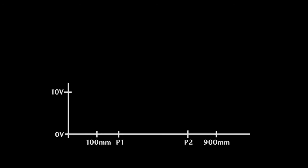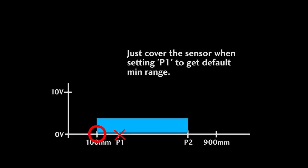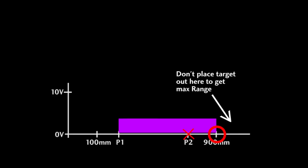Suppose you just want to detect all the objects from the minimum possible range to some fixed point. Well, that's easy. Just cover the sensor when you set the min range. It will default to the min. That doesn't work for the max range. Don't set the sensor distance past the max rating for the sensor – in this case 900 millimeters. It may give you unpredictable and unrepeatable results.